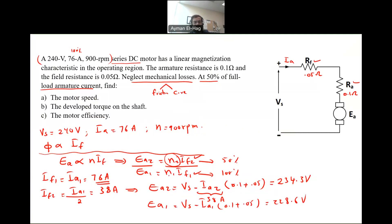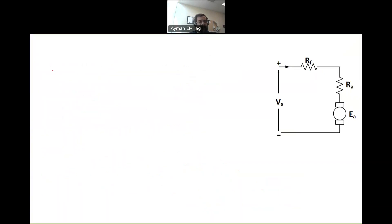Now I have everything and the speed at the first condition is equal to 900 RPM. Now we are set. We have 234.3 divided by 228.6 equal to the 38 current times N2 divided by the 76 current times N1, which is 900. And this will lead that your speed at 50% load is equal to 1844.9 RPM. This is expected from the series motor. We know that once the loading conditions change, there is a significant change in the speed.